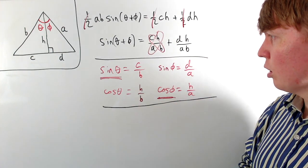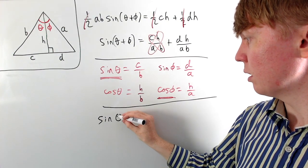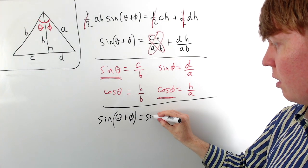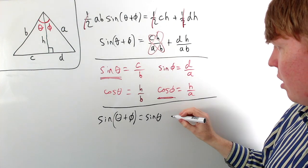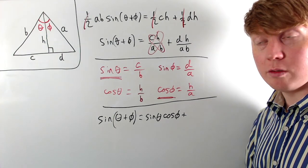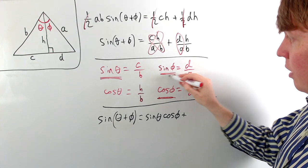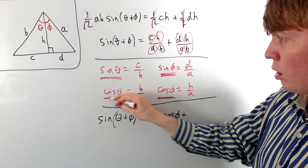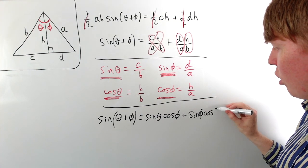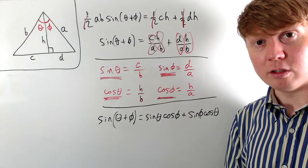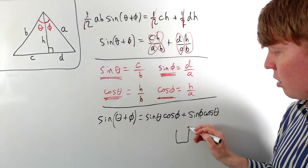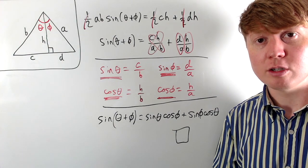So this is where we get our sine θ cos φ term from. We can write the whole thing as: sine(θ + φ) = (c/b)(h/a) + (d/a)(h/b), which becomes sine θ cos φ + sine φ cos θ. We've now derived the angle sum formula for sine, at least for suitably small values of θ and φ. Next we'll look at doing the same thing for the angle sum formula for cosine.